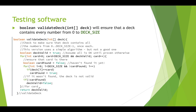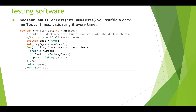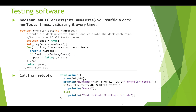That's one algorithm to test. The other function, shuffler test, is pretty simple. We loop the number of test times, shuffle the deck, and call validate deck. If it returns false, our pass value is set to false and we return false — meaning we didn't pass the test. We call this from our setup function: if shuffler test passes, we print 'pass'; if not, we print 'test failed, shuffler is bad'.